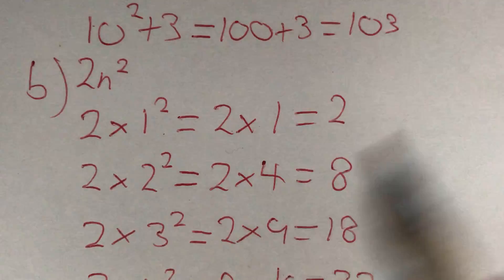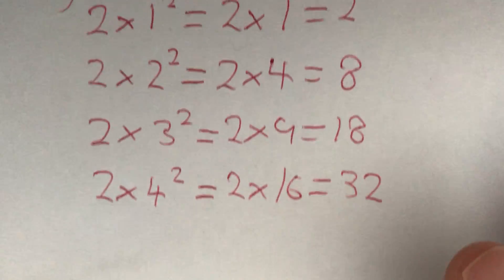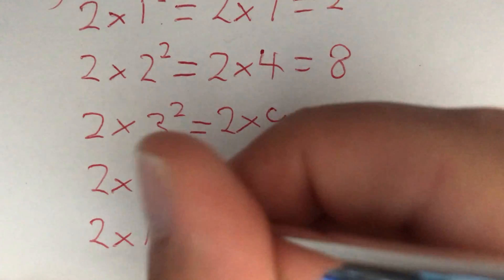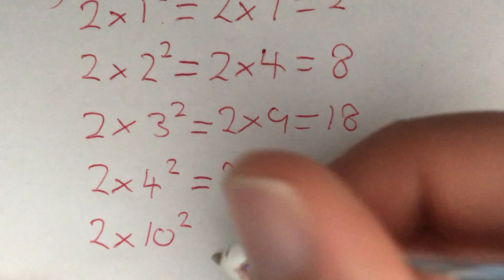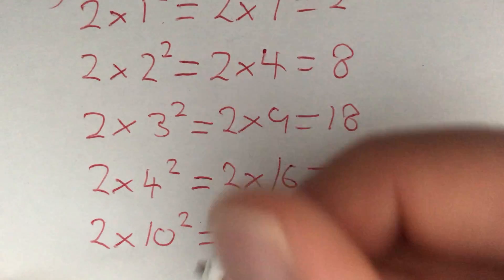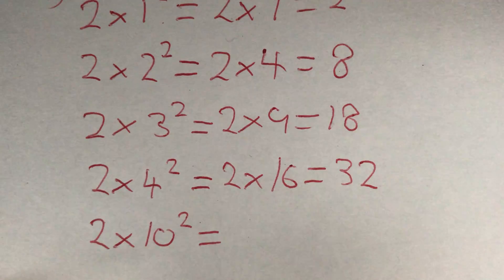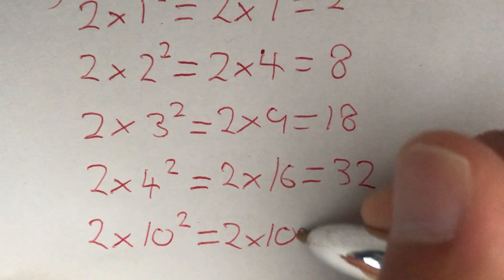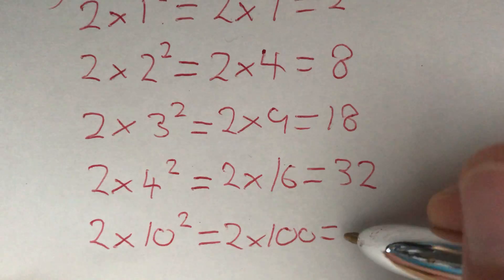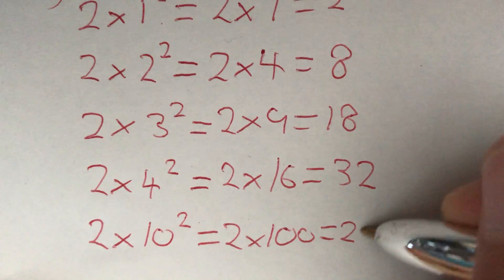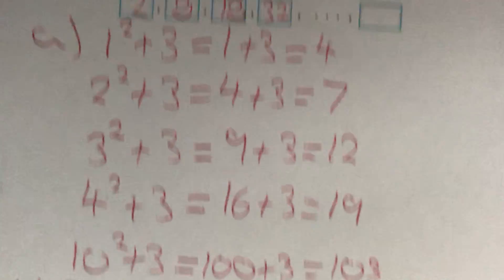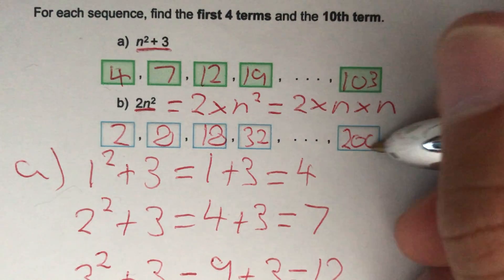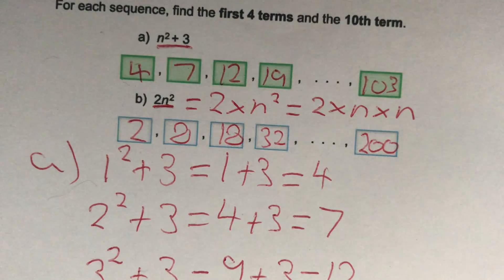Finally, we're asked for our 10th term. We replace n with 10. So 2 times 10 squared. 10 squared was equal to 100, so 2 times 100, which is equal to 200. So our 10th term for the sequence is going to be 200.